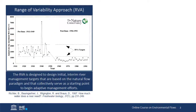Both methods were developed by scientists at The Nature Conservancy, led by Brian Richter and in cooperation with a number of partners. The first is the Range of Variability Approach, or RVA, which was published in 1997, one year after publication of the indicators of hydraulic alteration, and in the same year the natural flow paradigm was published. The IHA parameters are the basis for the RVA, which uses them to set flow management targets to restore more natural flow regimes in heavily modified systems.